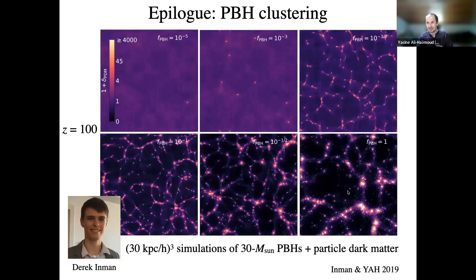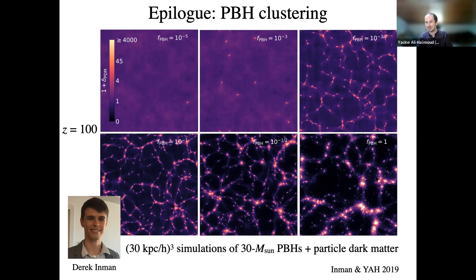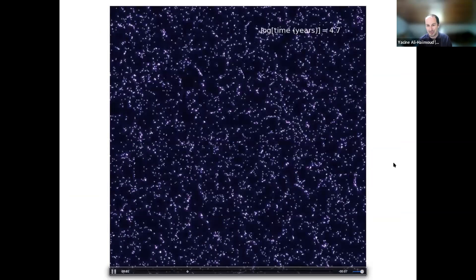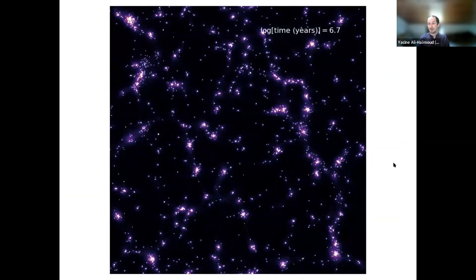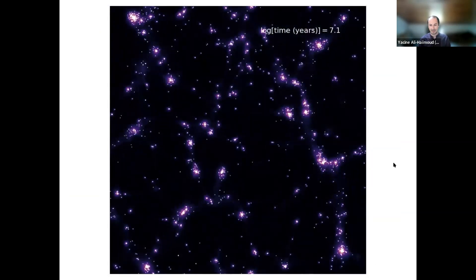I'll leave you with one slide as an epilogue, which has nothing to do with the CMB but advertises the work my former postdoc Derek Inman did on how primordial black holes cluster. Derek implemented simulations of primordial black holes plus particle dark matter. The key point is that if the universe contained primordial black holes, even as a fraction less than 100%, it would have a dramatic effect on the evolution of structure formation on very small scales, as early as redshift of a few hundred. I'll stop here and take questions.